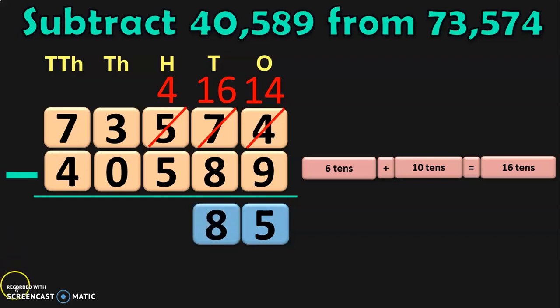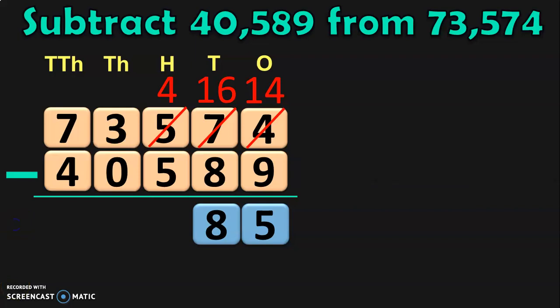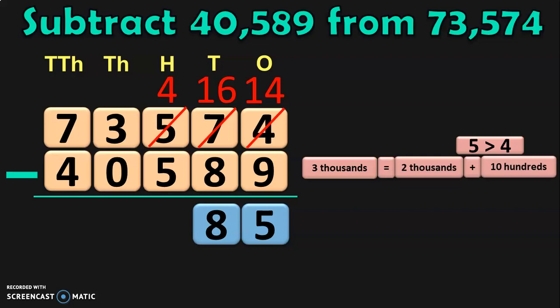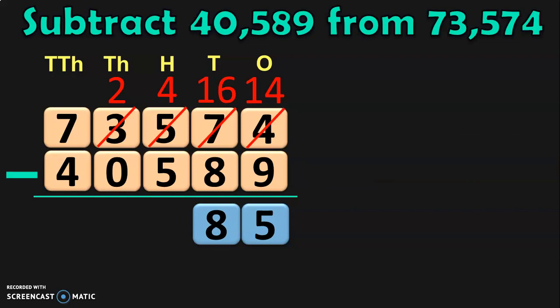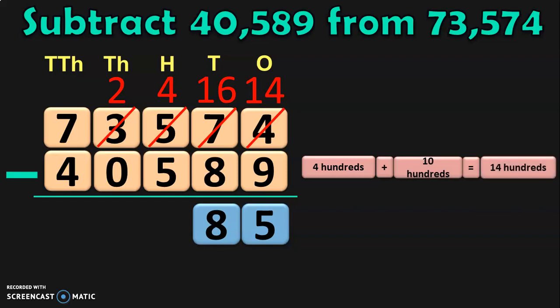Next, move on to the hundreds place for subtraction. In hundreds place, we have 4 minus 5. We know that 5 is greater than 4. So, now we will have to regroup the thousands place. In thousands place, you have 3 thousands. 3 thousands can be written as 2 thousands plus 1 thousand, and that 1 thousand is nothing but 10 hundreds. So, retain the 2 thousands in the thousands place and take the 10 hundreds to the hundreds place. In hundreds place, you already have 4 hundreds. So, 4 hundreds plus 10 hundreds will give you 14 hundreds. Now, in hundreds place, you have 14. So, 14 minus 5 will give you 9.